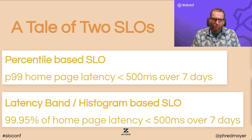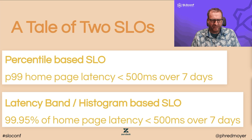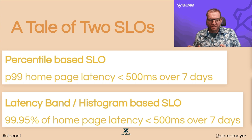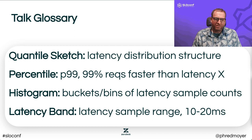There's a subtle difference here. One says: I want my P99 under this limit. The other says: I want my total number of requests under this threshold. I'm here to talk about why you should focus on the second option — specifying the total percentage of requests you want under a threshold — versus just looking at something like a P99.